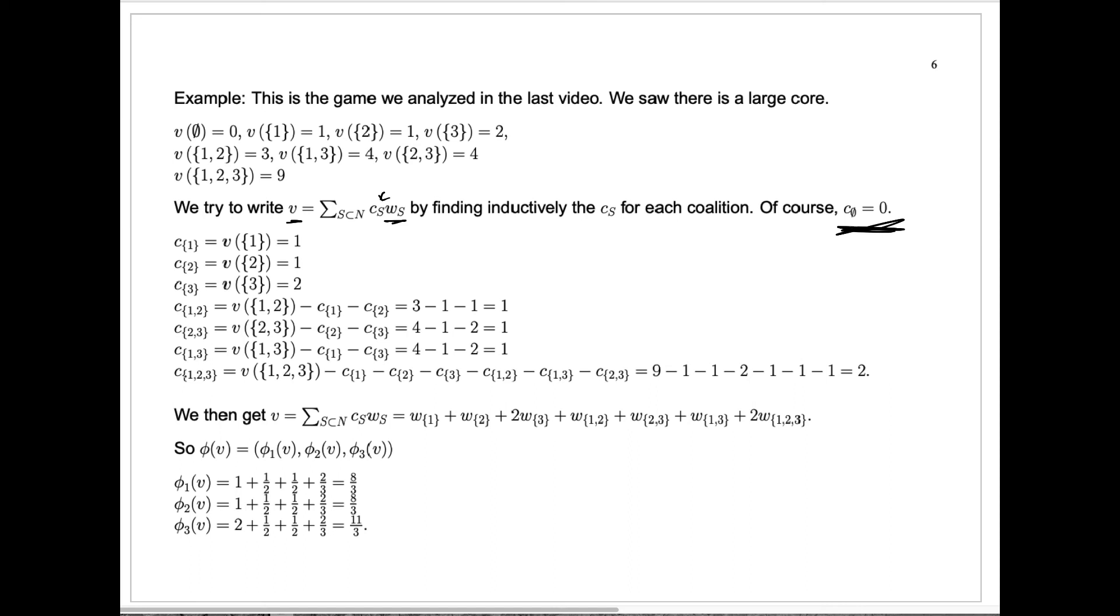And finally, the constant that we have for the set 1, 2, 3 is the value for that whole grand coalition 1, 2, and 3. And we subtract the constants for every subset, again ignoring the empty set. We subtract c of the singleton set 1, the singleton set 2, etc. And we get 9, that's the value for the grand coalition, minus these other constants, so minus 1, minus 2, minus 1, minus 1, minus 1. And we end up with the constant 2.